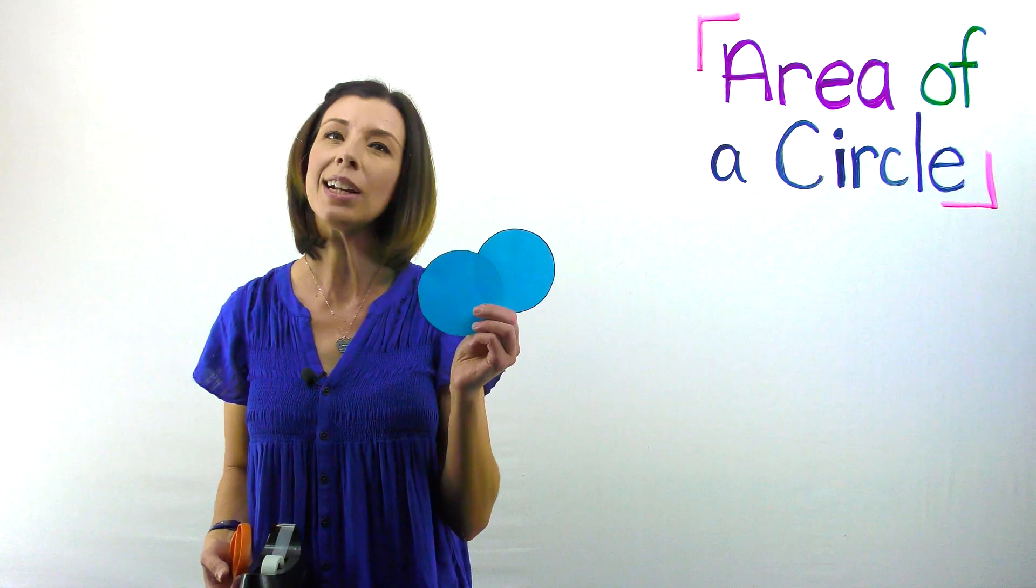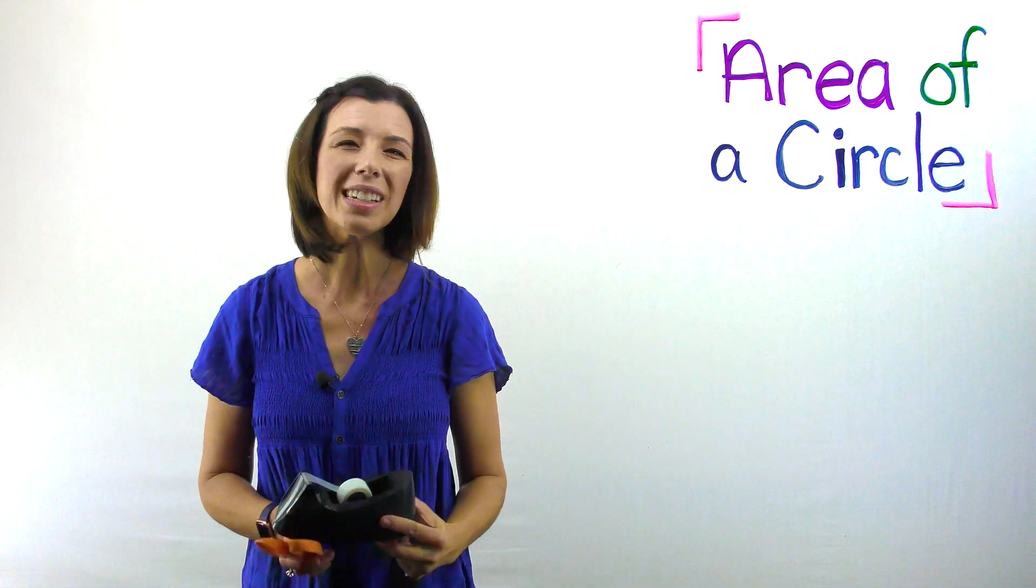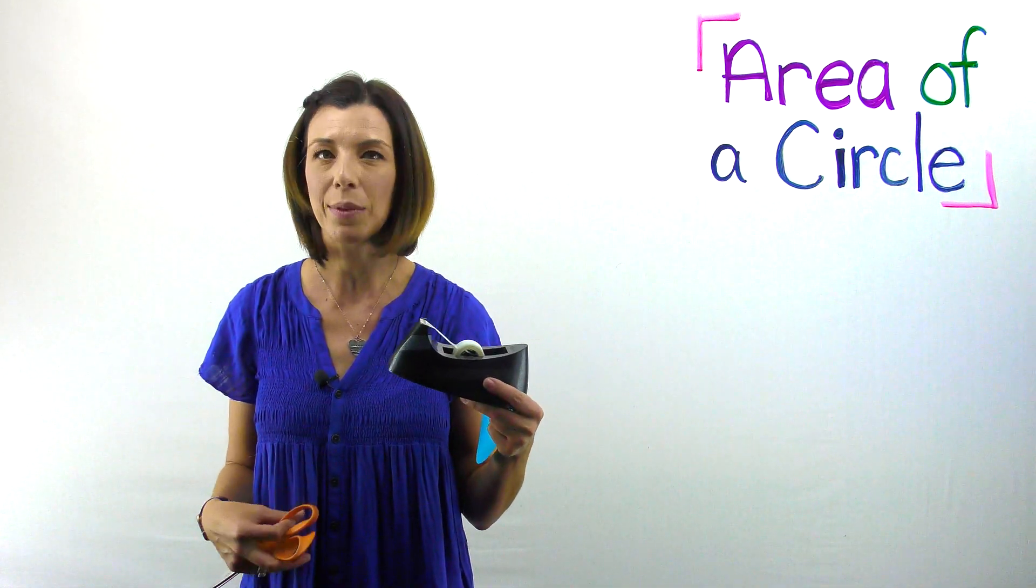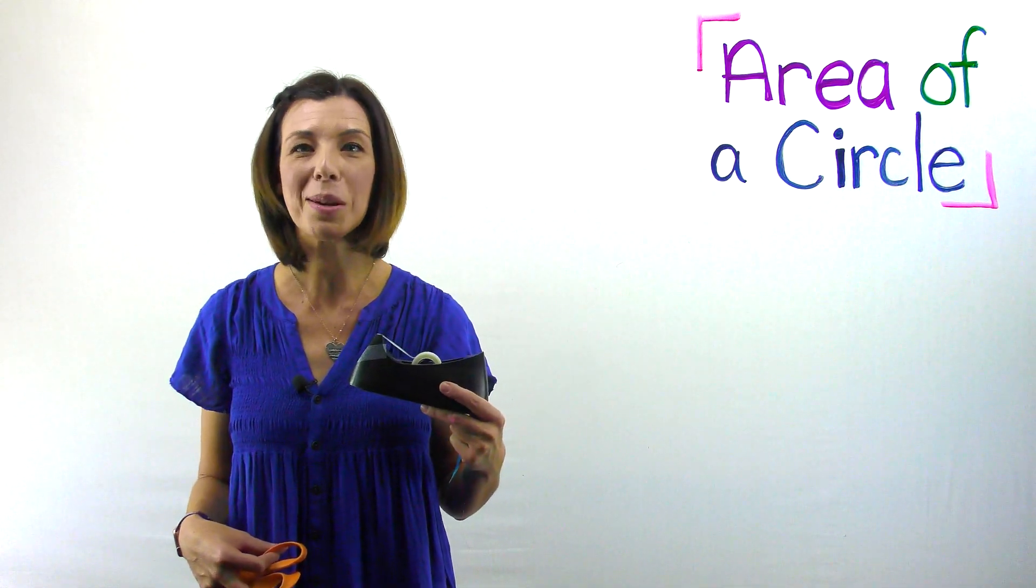Here's the materials that you're going to need for this experiment. You're going to need two equally sized circles, a pair of scissors, and something to glue or tape it down with. I'm going to use tape in this case because glue doesn't work very well on my board.